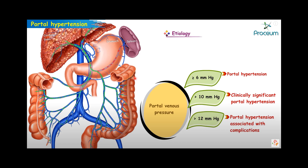As this graphic shows, anything over 6 mmHg is considered portal hypertension. It starts to become clinically significant when it's over 10, and once it gets over 12 we're starting to see some complications. The most frequent complications we see with portal hypertension would be ascites, varices, and splenomegaly. Something else you usually see is portal vein dilation.